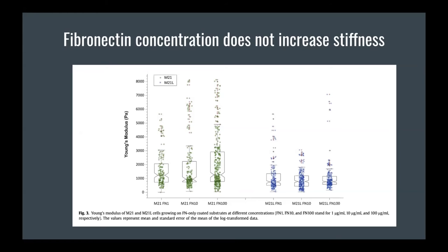Notably, the Young's modulus scale on this graph goes up to 8,000, much higher than the previous graph which only reached about 1,200. This occurs because in this experiment they used fibronectin without BSA — bovine serum albumin. BSA in the previous experiment blocked fetal calf serum from binding to fibronectin; without BSA, fetal calf serum can bind and bring along other proteins, making cells even stiffer.